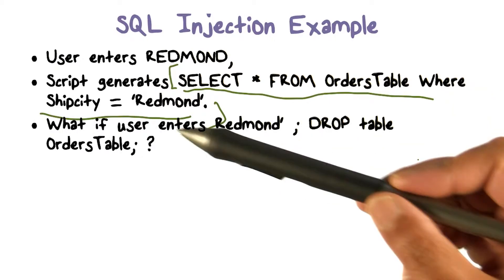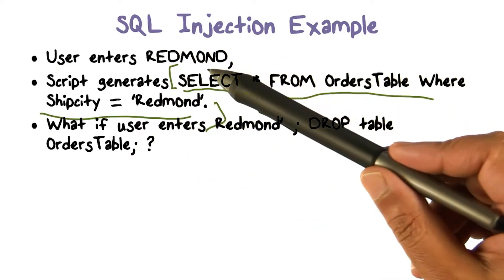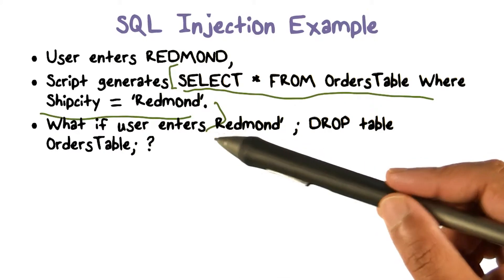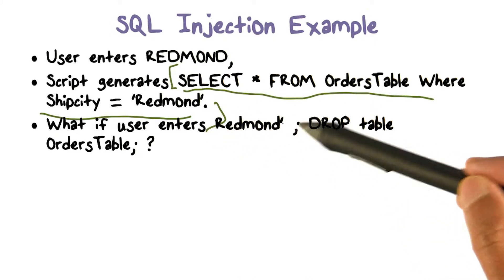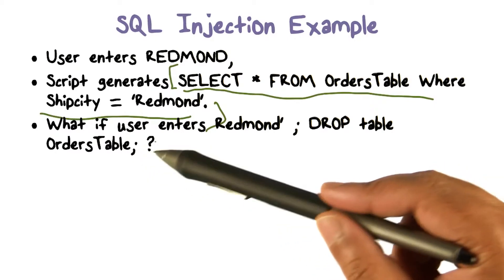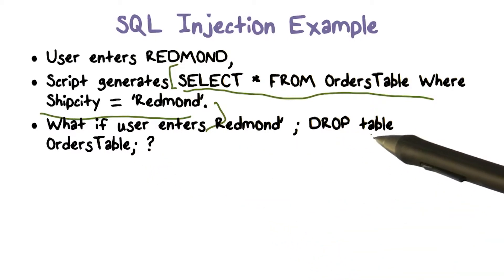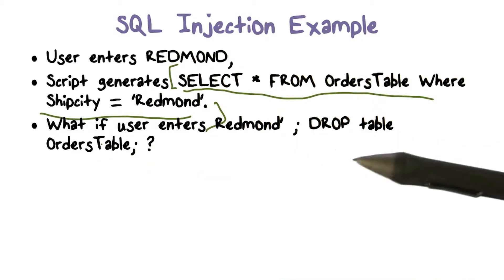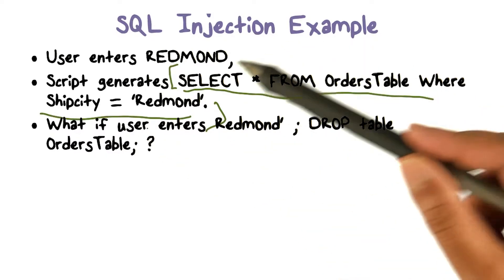Now let's get to what kind of mischief a user who is malicious may do. So what if the user, instead of providing Redmond, is going to provide something that says Redmond semicolon DROP table OrdersTable.